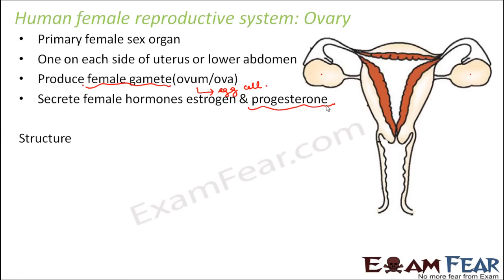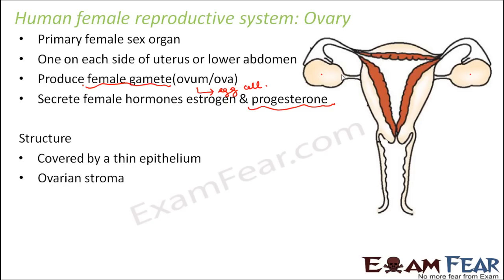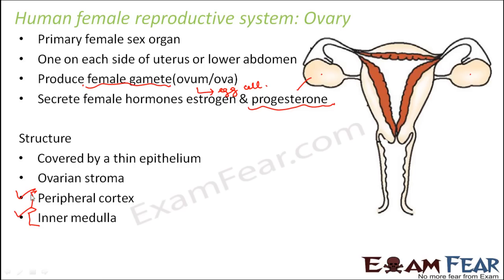Now if we talk about the structure of the ovary, it is covered by a thin epithelium — the outermost layer. Inside that is the ovarian stroma. The ovarian stroma is further divided into two categories: peripheral cortex and inner medulla. The outer layer is termed as cortex and the inner layer is termed as medulla. This is the overall structure of the ovary.